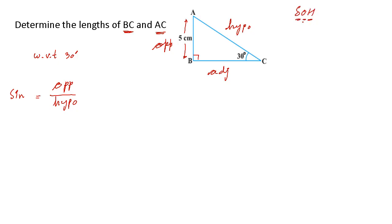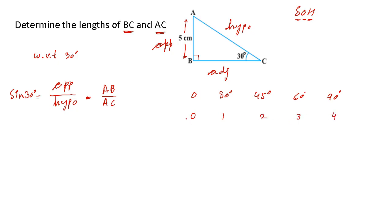This ratio is sine — remember the SOH-CAH-TOA definition: sine is opposite divided by hypotenuse. So let me write sine of 30 degrees, which equals AB (the opposite side) divided by AC (the hypotenuse). From the trigonometric table, using the shortcut — write 0, 1, 2, 3, 4, take square roots, divide by 2 — the value of sine 30 degrees is root(1)/2, which equals 1/2.